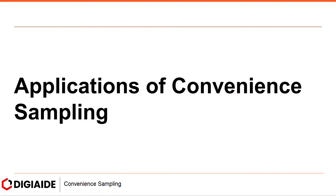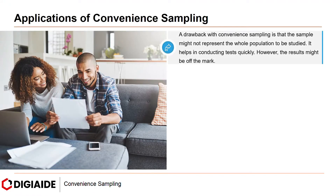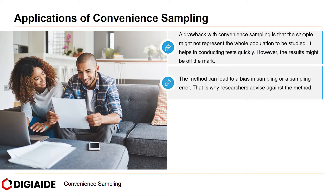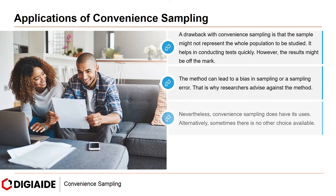Moving on to Applications of Convenience Sampling. A drawback with Convenience Sampling is that the sample might not represent the whole population to be studied. It helps in conducting tests quickly. However, the results might be off the mark. The method can lead to a bias in sampling or a sampling error. That is why researchers advise against the method.